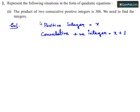According to the given problem, the product of 2 consecutive positive numbers is 306. That is x multiplied by x plus 1 is equal to 306.